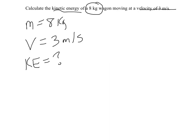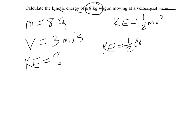Now all we need to do to figure this out is the formula for kinetic energy. The formula for kinetic energy is ½mv². So this is simply a matter of plugging in our information. Kinetic energy is ½ times 8 kilograms times 3 meters per second squared. As long as our units are in kilograms and meters per second, we will end up with the units we want, which is joules. So this will end up being ½ times 8 times 3 squared.